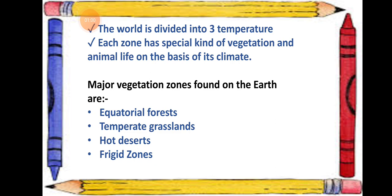Our world is divided into three temperature zones. Each zone has a special kind of vegetation and animal life based on its climate. These three zones are the torrid zone, which is the hottest; the temperate zone, which is mild or moderate — not very hot and not very cold; and the frigid zone, which is very cold and most of the time remains covered with snow.